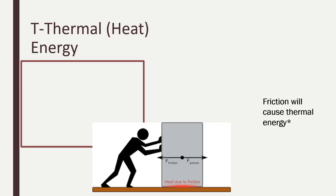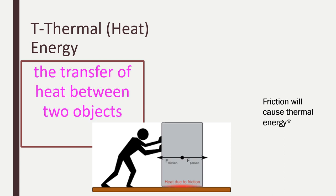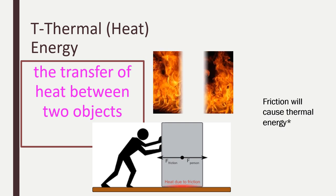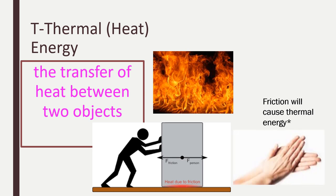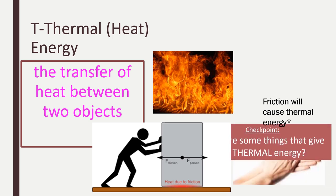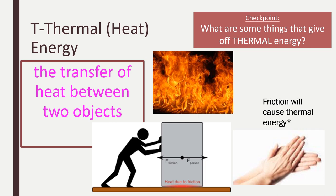Thermal energy is the same as heat energy. Thermal energy is the transfer of heat between two objects. Now think about friction — we learned about friction last week. Friction is the force that slows things down. But if we rub our hands together, the friction will cause thermal energy.